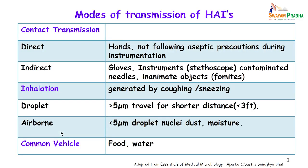What are the modes of transmission of hospital acquired infections? They are divided into three groups: contact transmission, which may be direct or indirect; inhalation, which is droplet or airborne; and common vehicle. In direct contact transmission, it is usually via hands which have not been washed properly or by not following aseptic precautions during instrumentation.